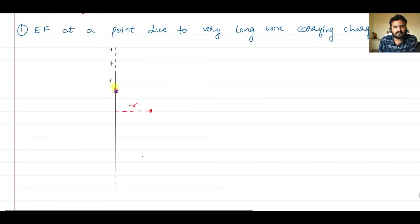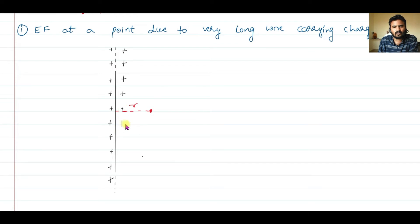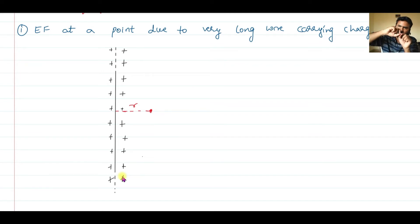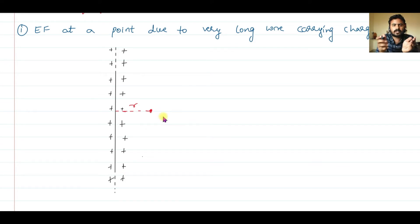At a distance r from this wire carrying a positive charge, I need to find out how much is the electric field. I know that electric field due to a point positive charge is radially outwards, and for one charge q the electric field is kq/r². But here the charge is distributed throughout the wire, so we are going to make use of Gauss law to obtain the electric field at a distance r.